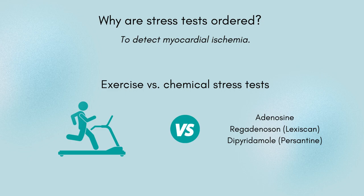Please note: if you suspect acute coronary syndrome with symptoms of exertional chest pain, abnormalities of the EKG, and/or elevated cardiac biomarkers called troponin, then the patient will require urgent cardiac catheterization for a definitive diagnosis.